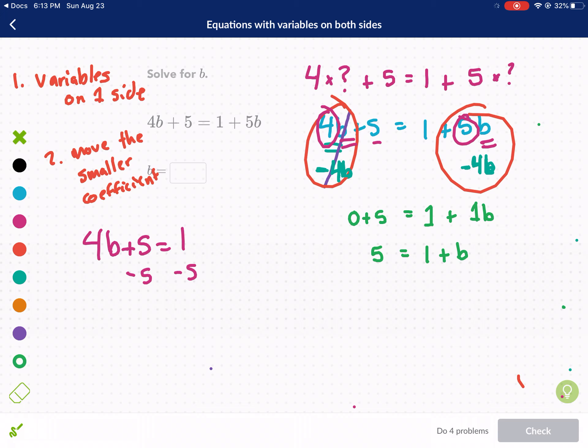Now we're just on to the last part which is solving for b. It's already by itself pretty much. We just have to subtract 1 from both sides. So now we have 4 equals b and our answer is 4.